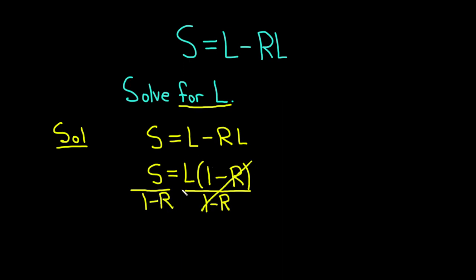Now these cancel, and so you get 1, so it goes away. So you have S over 1 minus R is equal to L.